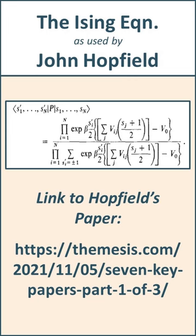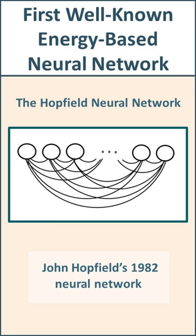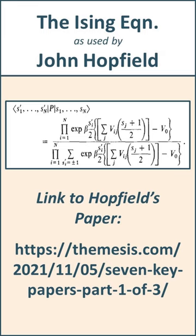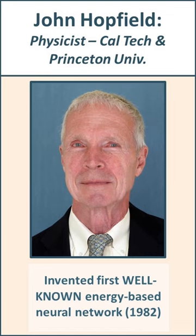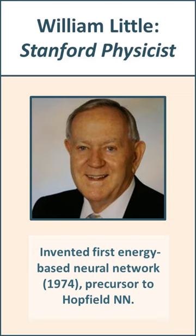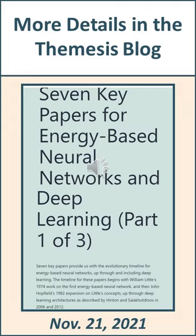The reason why understanding that first neural network, the Hopfield neural network, gives you such a powerful and transformative capability is that all of these neural networks are based on the same fundamental equation: the Ising equation. The Hopfield neural network was invented by John Hopfield in 1982. What many of us don't know is that Hopfield's neural network uses the same Ising model as that used by William Little some eight years earlier. The same statistical mechanics equation, the Ising model, has been used throughout.